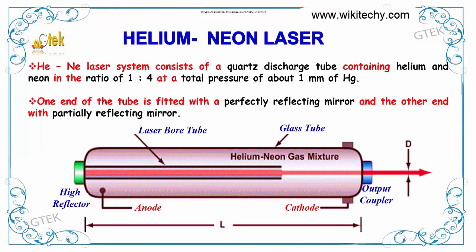We'll talk about Helium Neon Laser. The Helium Neon Laser system consists of a quartz discharge tube containing helium and neon in the ratio of 1 to 4, at a total pressure of about 1 mm of Hg. One end of the tube is fitted with a perfectly reflecting mirror and the other end is connected to anode and cathode. This is the laser bore tube.